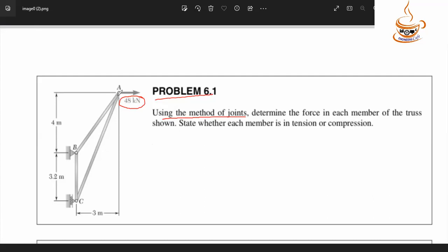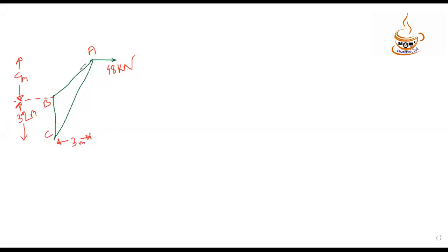We will use the method of joints. This is a free body diagram. There is a 40 kilo Newton load applied horizontally. At the support, we need to find the reaction forces — the vertical reaction and the horizontal reaction at each support.